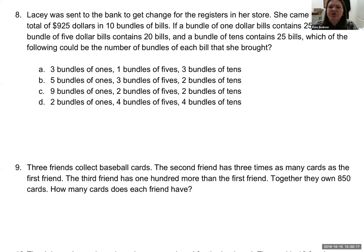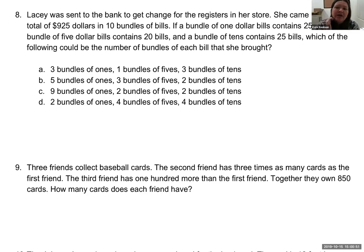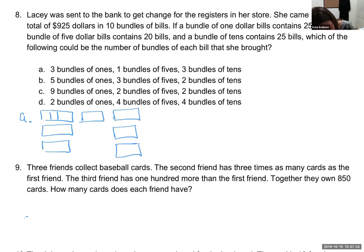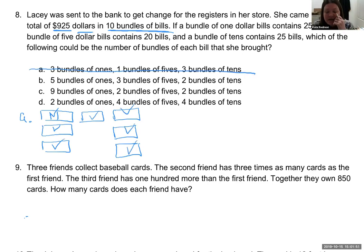Number eight: Lacey came back from the bank with $925 in 10 bundles of bills. A bundle of $1 bills contains 25 bills, a bundle of $5 bills contains 20 bills, and a bundle of $10 bills contains 25 bills. Which of the following could be the number of bundles of each bill she brought? Answer A gives three bundles of 1s, one bundle of 5s, and three bundles of 10s — that's only seven bundles, not ten. Eliminated.